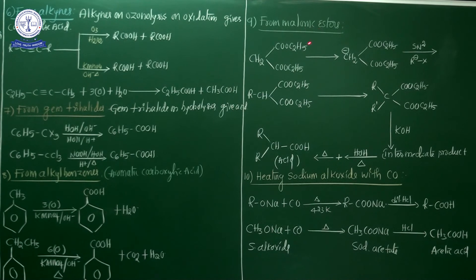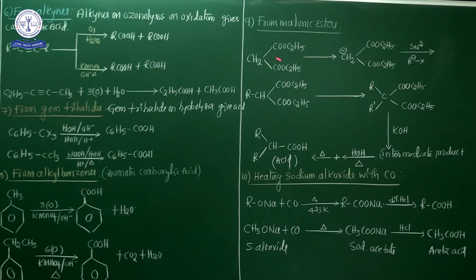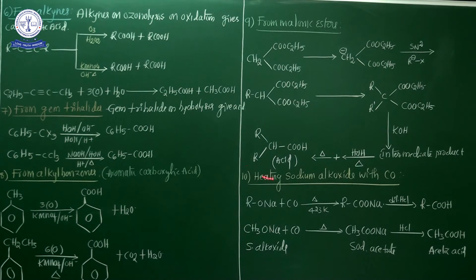The ninth preparation method is from malonic esters — a very important method. From malonic ester (CH₂(COOC₂H₅)₂), through an SN2 reaction mechanism, hydrolysis with KOH gives an intermediate product. This intermediate product is again treated with water to finally give the acid. This method is not required at board level but is important for NEET level.